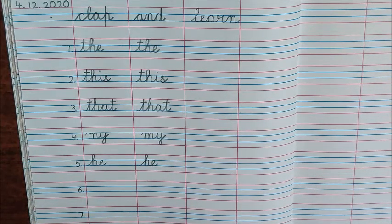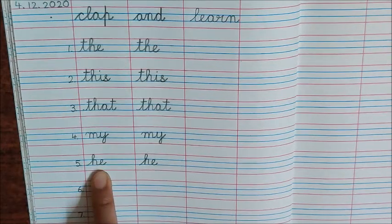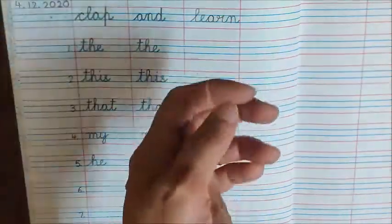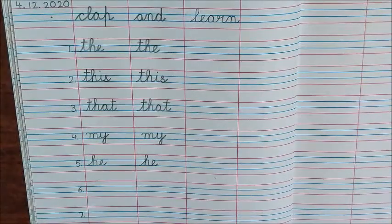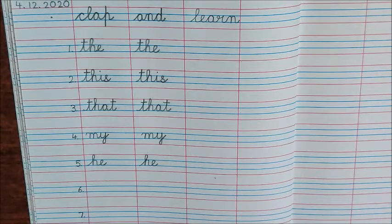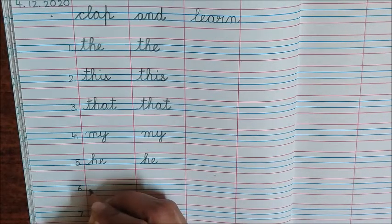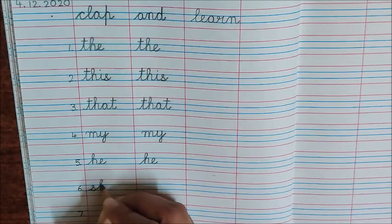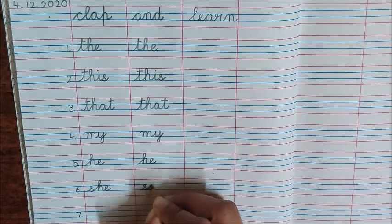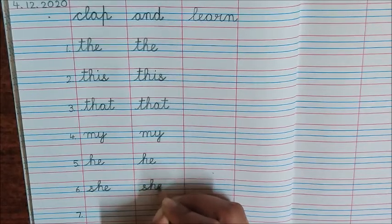Now this word is used for a girl. Just like we use 'he' for a boy, we use this word for a girl. What is it? She. S, H, E — she. I hope you are clapping and saying the letters with me. Writing time: S, H, E — she. S, H, E — she.